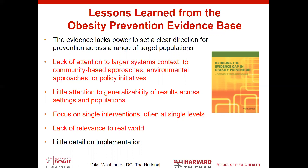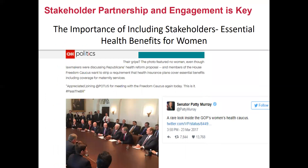An example of not getting it right is this photograph from the efforts in 2017 by Congress, particularly the Freedom Caucus, to rewrite the Affordable Care Act regulations around essential health benefits — particularly essential health benefits for women. You can see in the slide that all of the stakeholders sitting around the table are men. This is an extreme example of approaching things without thinking about the end users, the stakeholders, the people for whom a particular topic is most relevant.